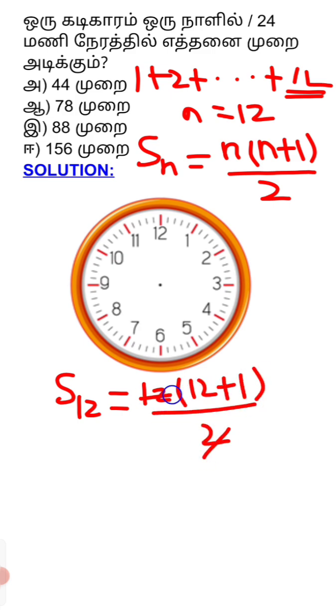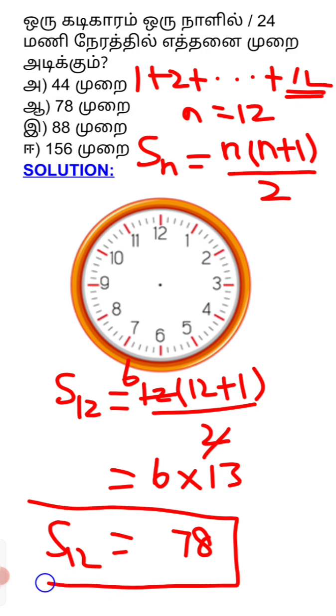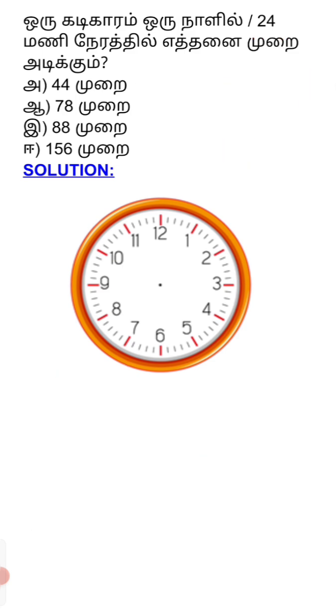Okay, so 12 divided by 2 is 6. Then 12 plus 1 is 13. So we calculate 6 times 13, which equals 78. This is the value for 12 hours.